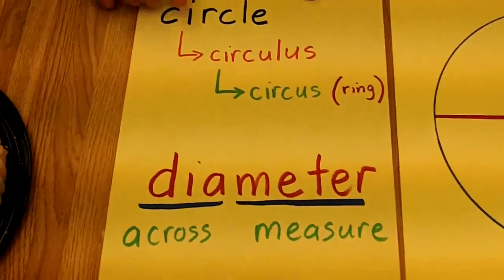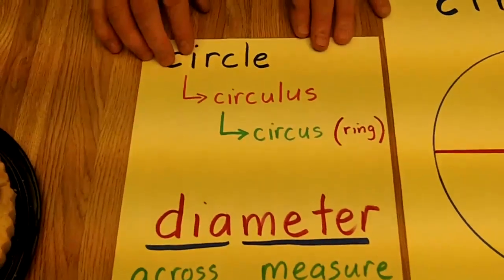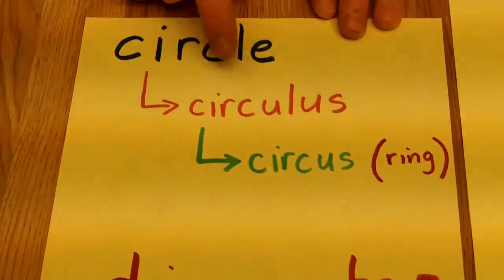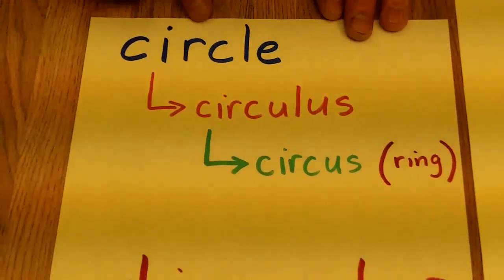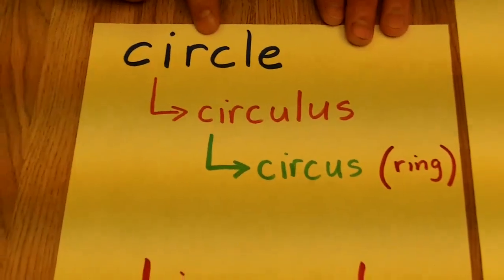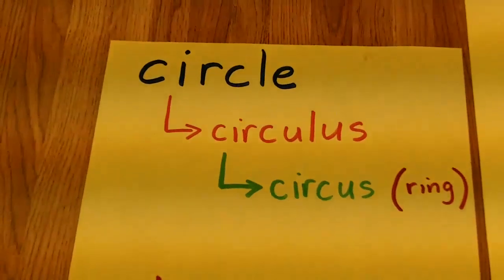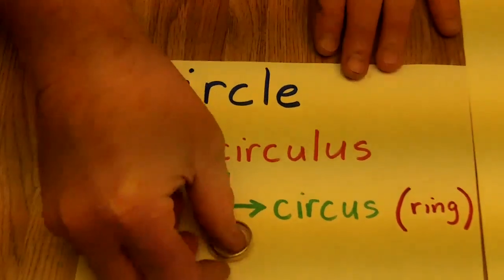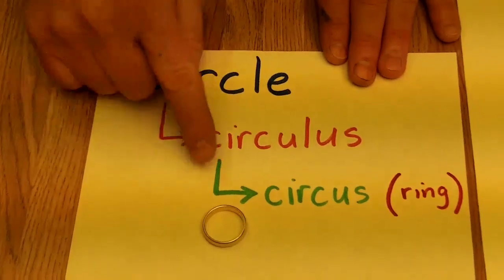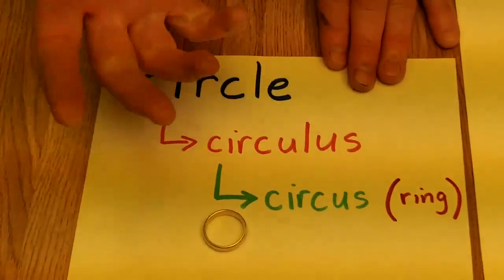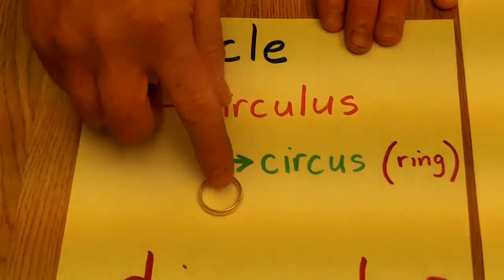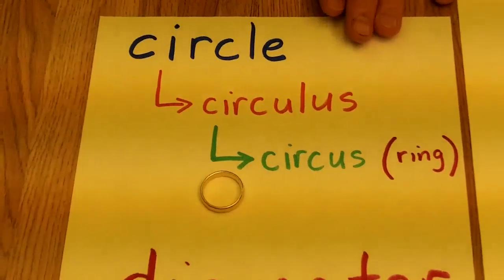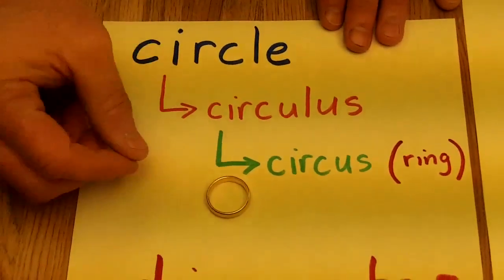Now, circle comes from the Latin word, the ancient Romans. They used the word circulus, and from that we get circle. And in fact, their word for ring was very close to our circle. It was circus. In fact, most circuses have two or three rings where the animals and performers do their shows.